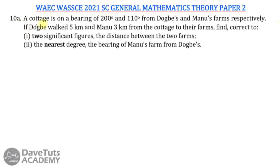In this question on bearing and distance, we are told that the cottage is on a bearing of 200 degrees and 110 degrees from the base and Manu's farms respectively. Will walked five kilometers and Manu three kilometers from the cottage to their farms. We have to find, correct to two significant figures, the distance between the two farms, and to the nearest degree, the bearing of Manu's farm from the base farm.